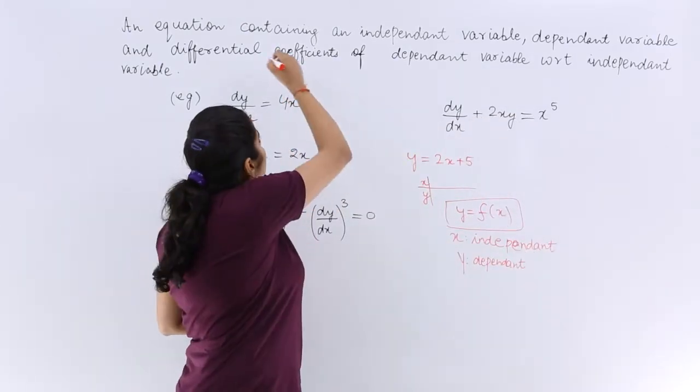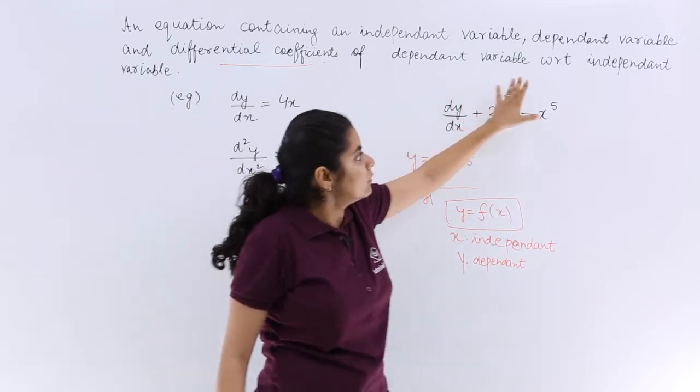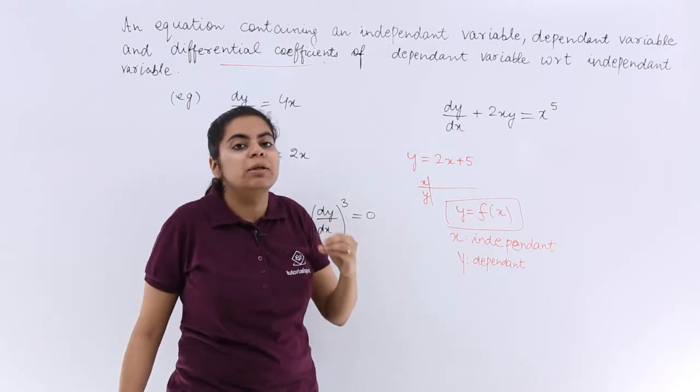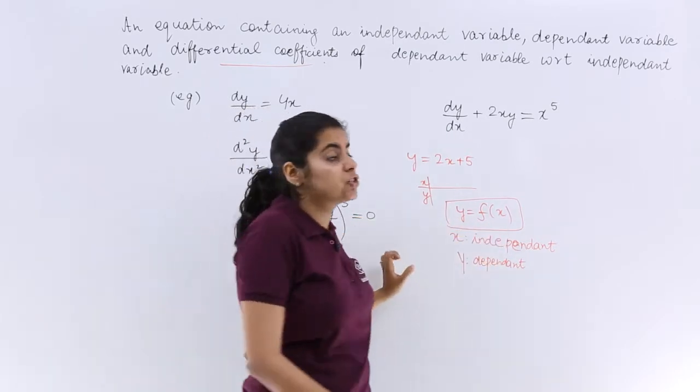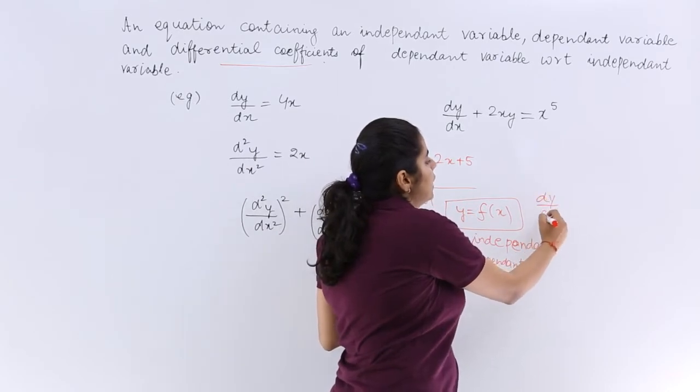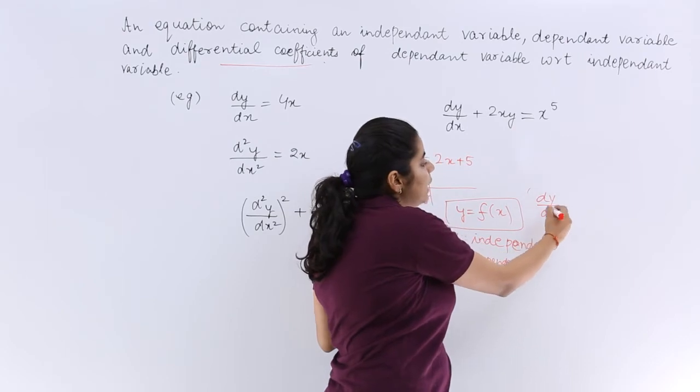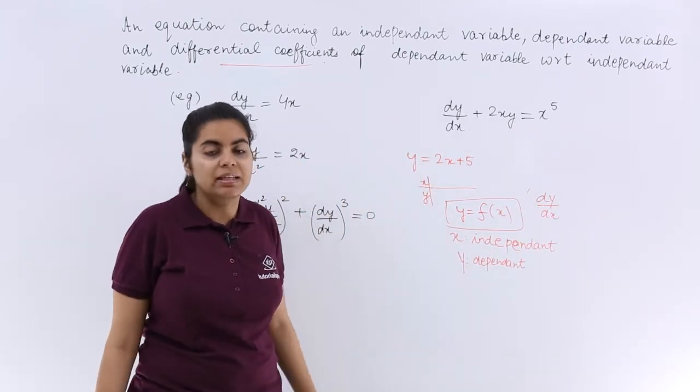This word is important: differential coefficients of dependent with respect to independent. So if I say that dependent is y, independent is x, then differential coefficient is dy upon dx. Because differential coefficient of dependent over differential coefficient of independent.